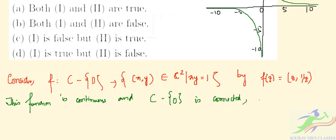So the set, we can say that the set {(x,y) ∈ ℂ² | xy = 1} is connected.